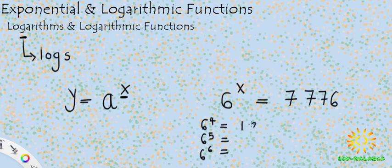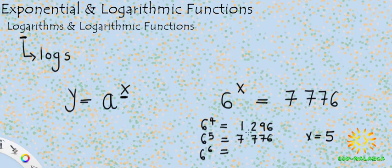For 6 to the power of 4 we would have found 1,296. For 6 to the power of 5 we would have found 7,776, and then we would have known that x is equal to 5. But this method can take very long because we have to keep changing the powers until we find the correct one. So if we use logs, we can solve for x in a much simpler way.